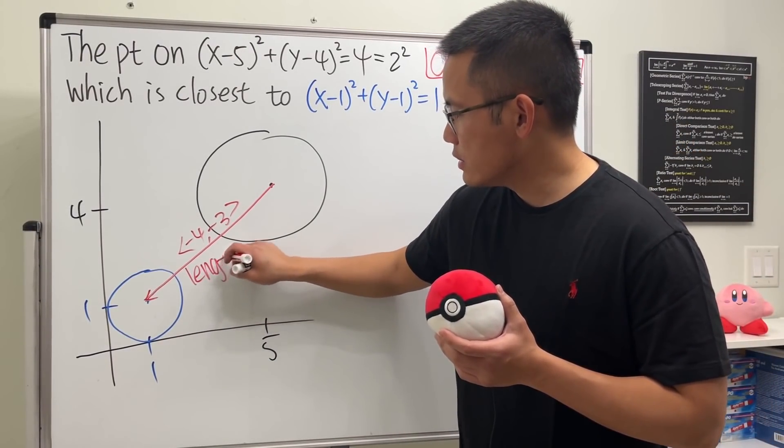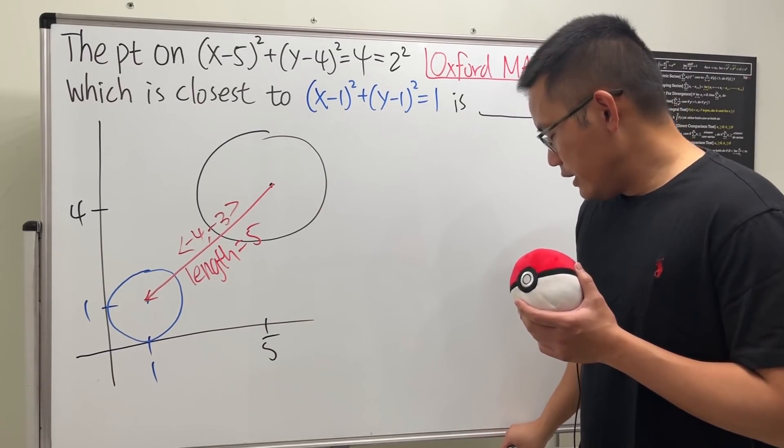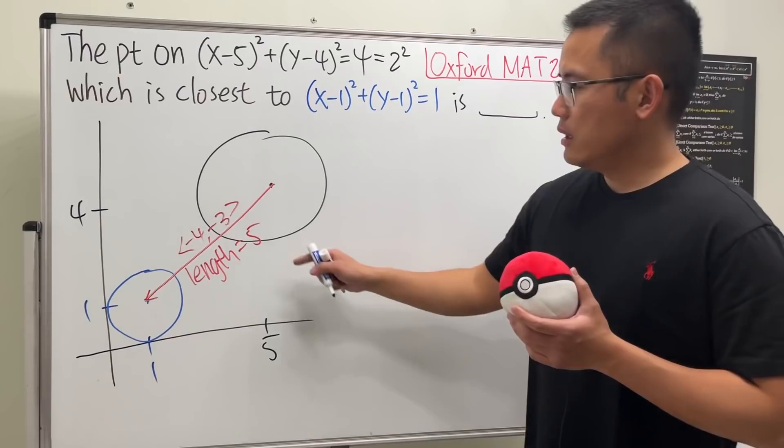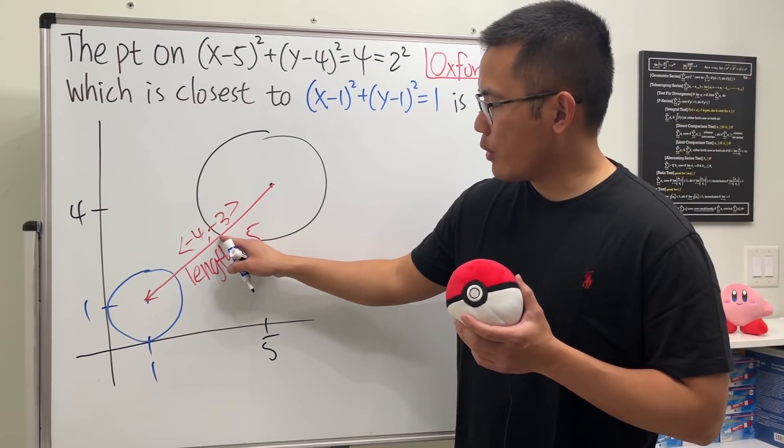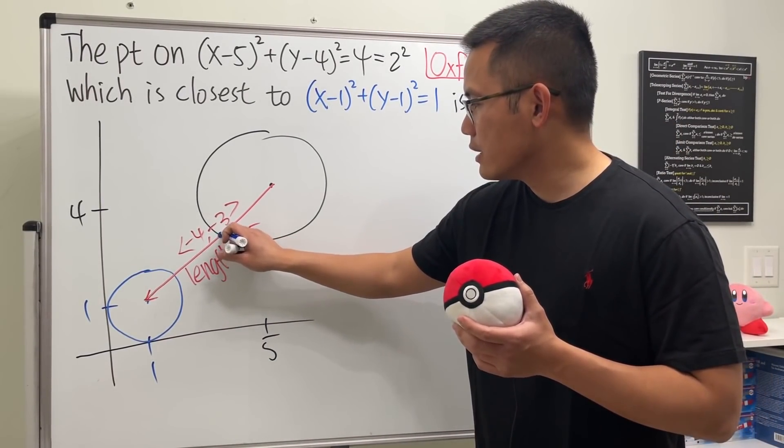And then you see that the length, like this right here from here to here, is 5. So that's pretty good.